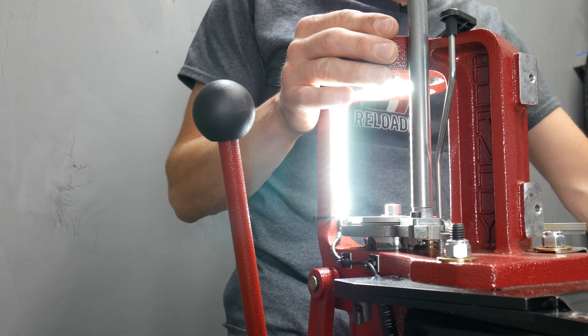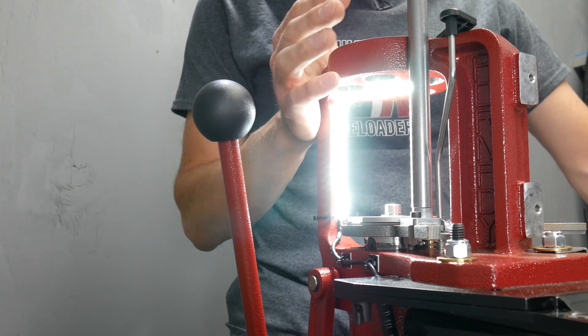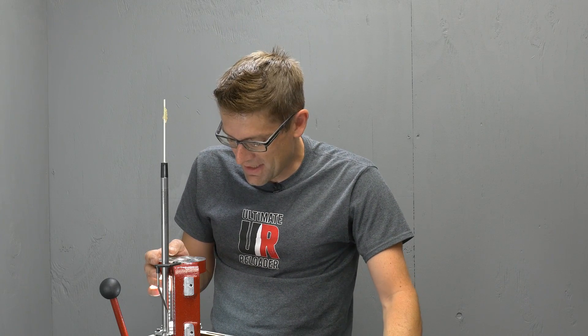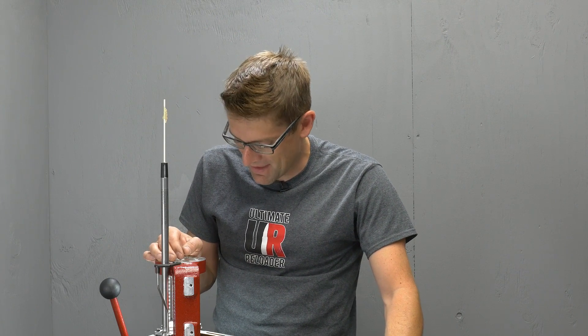That is really cool. I'm sorry if this is blinding you. That is a lot of light. 500 lumens is quite a bit. So let's take a quick look at the press doing some loading. We'll see how well we can see the powder and then take things from there.